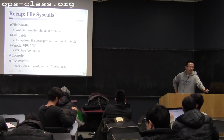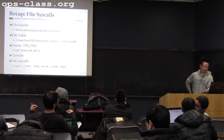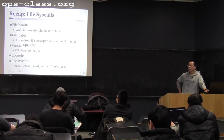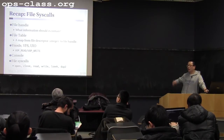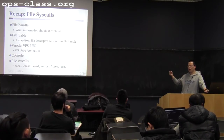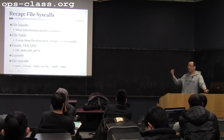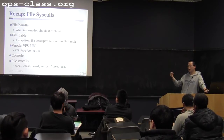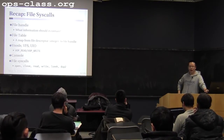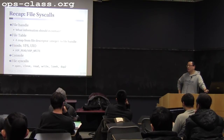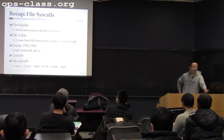So before we talk about today's process syscalls, let's do a quick recap of what we talked about last time. We went over the file handle design. So what information should go into the file handle? Basically the flags the user used when calling open, the offset, and the reference count. We need a reference count because a file handle could potentially be shared by multiple threads, so you need to maintain that count so that when close is called, you know when to destroy the file handle.